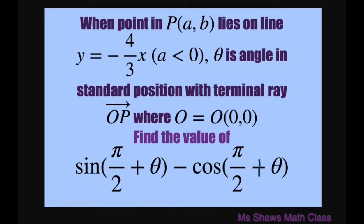Hi everyone. When a point AB lies on the line y equals negative four-thirds x and our a is negative, our angle is in standard position with terminal ray OP where O is the origin. We're going to find the value of sine of pi divided by 2 plus theta minus cosine of pi divided by 2 plus theta.